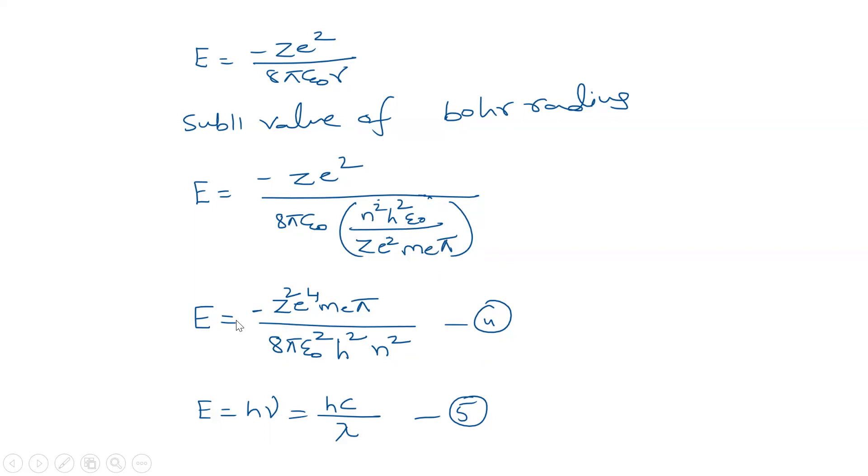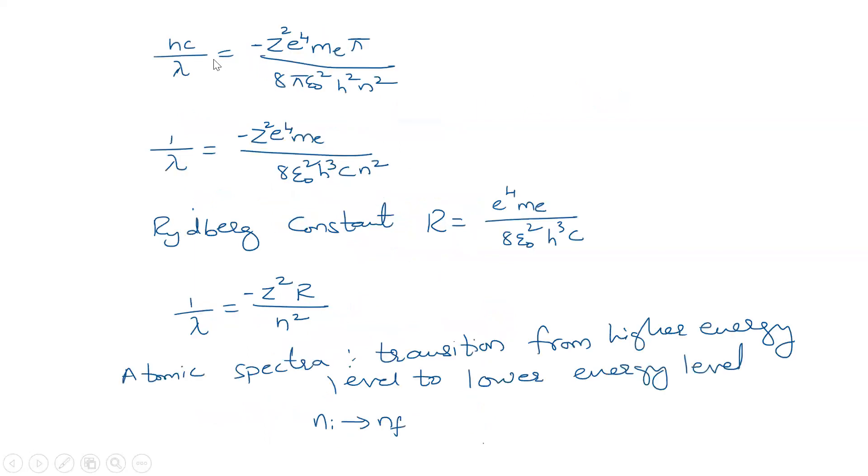When we substitute the value of Bohr radius here we get energy minus Ze squared e to the power 4. Then we get 8 pi epsilon naught h squared n squared. We know that energy E is equal to h nu which is hc by lambda. When hc by lambda is equated to this then we get 1 by lambda as such.